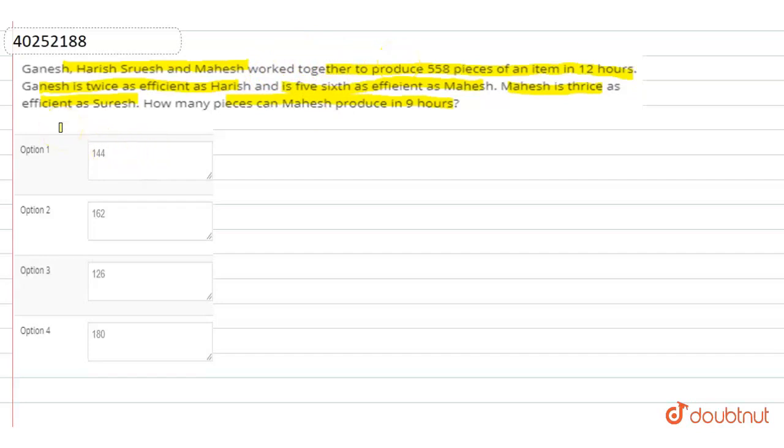Now, the efficiency of their relationship is given. Ganesh is twice as efficient as Harish, 5/6 as Mahesh, and Mahesh is 2/3 of Suresh. So we will have to take the efficiency first and then we will apply it. Let's see how to do it.